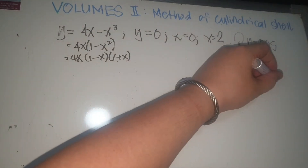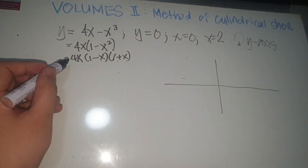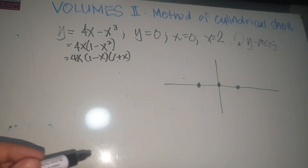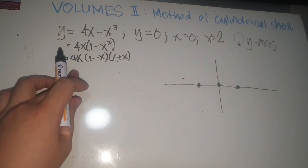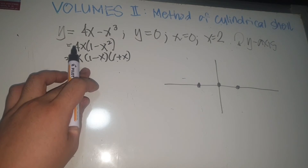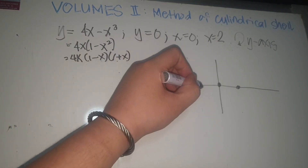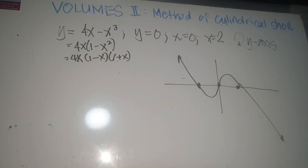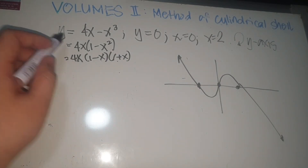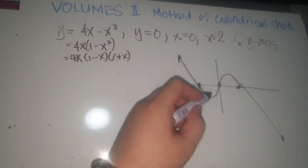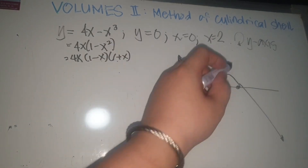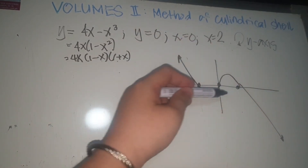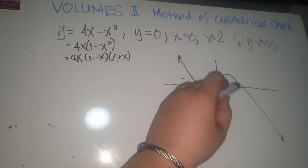The graph has three roots and three changes in slope — negative, positive, negative — looking something like a cubic wave. y = 0 is the x-axis, and the region is bounded by the graph, the x-axis, x = 0, and x = 2, so the shaded portion is this region. It is rotated about the y-axis.